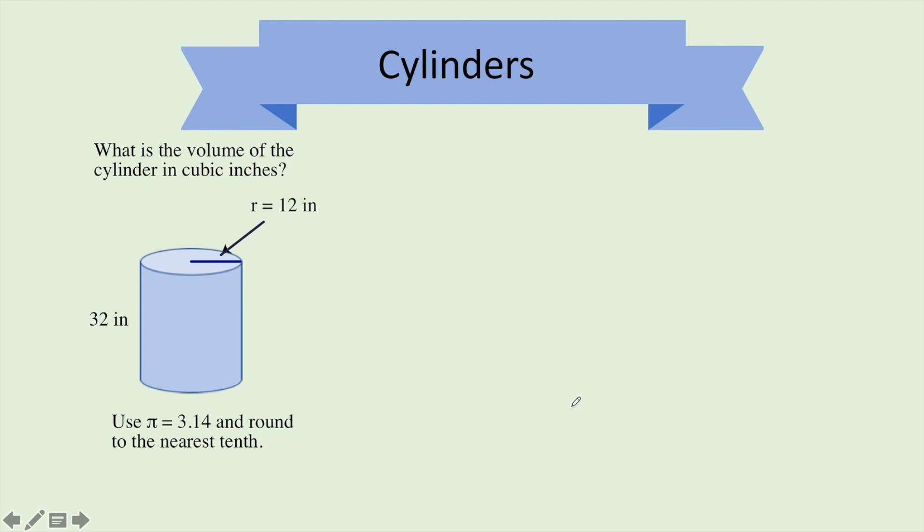Let's take a look at a cylinder. Again, we have to look at our formula sheet and find the volume of a cylinder. Volume of a cylinder is the area of the base times the height of the cylinder. On the formula sheet, it says pi r squared h. Pi r squared is the area of the base.